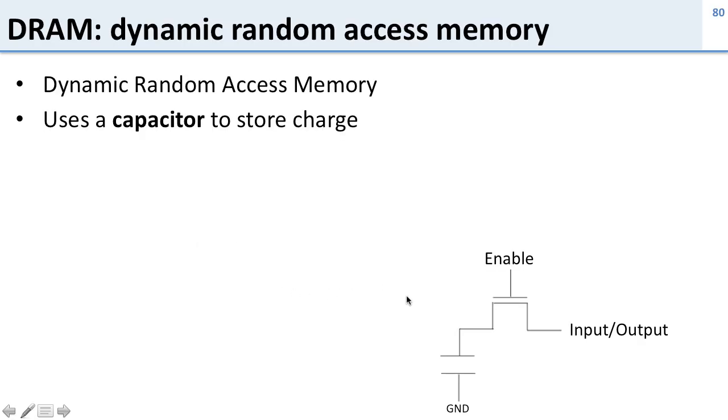Dynamic random access memory uses a capacitor to store charge. Remember in SRAM we had those two transistors. Here we just have one capacitor, and this little teeny capacitor has a little switch on it, so when you turn on the switch, whatever charge is on here goes out on the wire, and that's how you know if you have a zero or one.